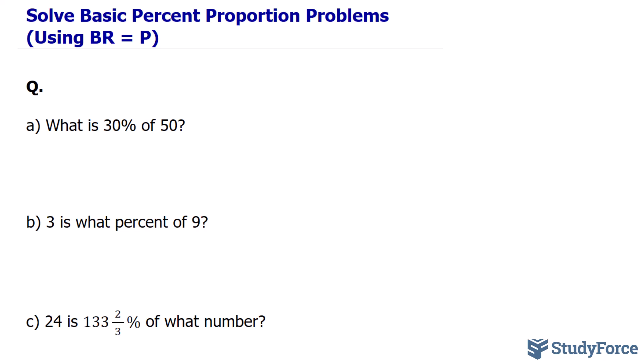Let's explore how to solve basic percentage word problems using a simple and effective formula BR equals P, where B is the base number, R is the rate or percentage, and P is the portion or result.